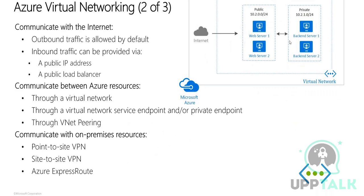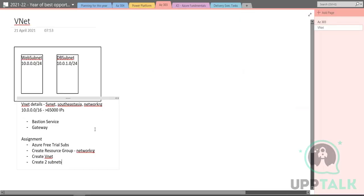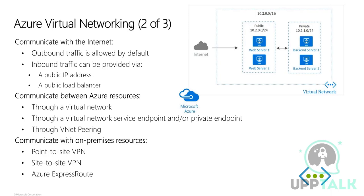Whenever you have subnets created, within each subnet you can create multiple virtual machines. Virtual networks are the foundation for your virtual machines. All the IP address ranges that we have mentioned will be used to assign private IPs to your virtual machines. That's the core purpose of creating these subnets.